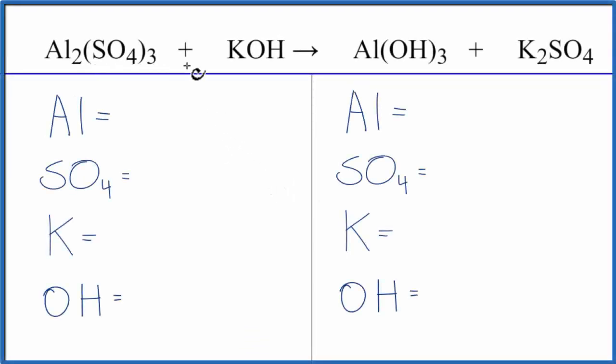To balance this equation, aluminum sulfate plus potassium hydroxide, let's count the atoms up on each side of the equation. We're going to do something a little different here to make it a lot easier. We see that we have SO4, this is called the sulfate ion, here and here.